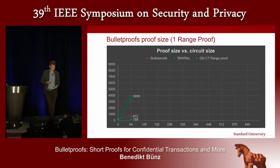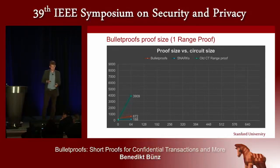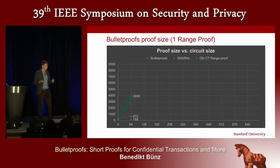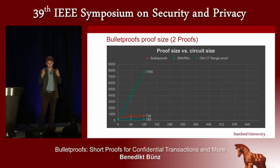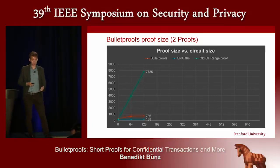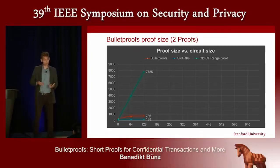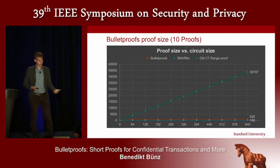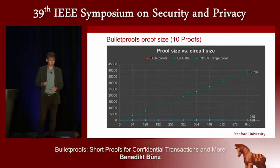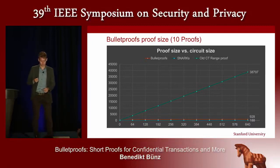For a single 64-bit range proof, proofs are now 670 bytes instead of 4 kilobytes. A transaction usually has multiple outputs — I send some money to a friend, and the change goes back to me. With two outputs, we can create an aggregated range proof for both commitments. Because of logarithmic scaling, the proof size only goes up by 64 bytes, versus the old range proof which scaled linearly. For 10 range proofs, it's still less than a kilobyte for Bulletproofs. SNARKs have constant-size proofs which are even smaller, but again have the downside of a trusted setup.